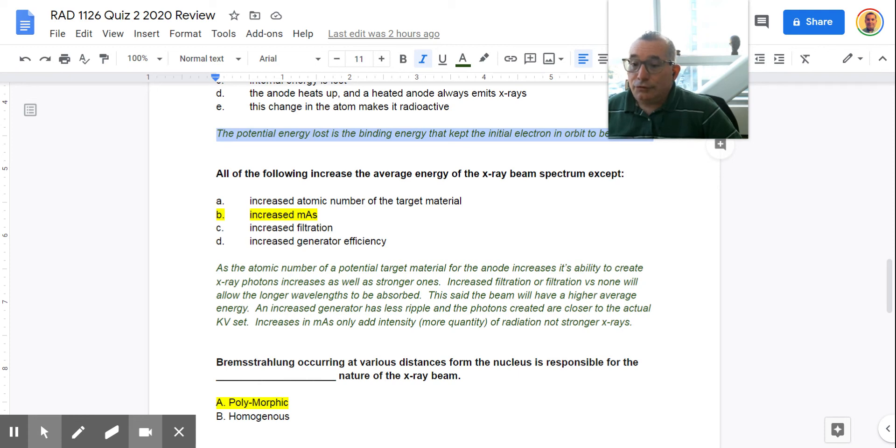So let's talk about the others on here that actually do increase the average energy. Increased filtration, or filtration versus not having any at all, is going to allow the longer wavelengths, the weaker radiation, to get absorbed. So then when you look at the beam after you've taken away the longer wavelengths, the weaker x-rays, if you look at what's left over, the average energy goes up. So it's said that the beam will have a higher average energy.